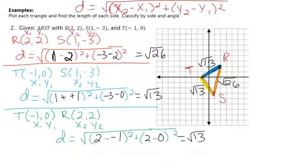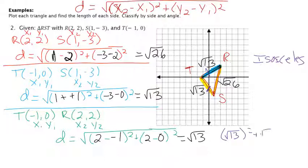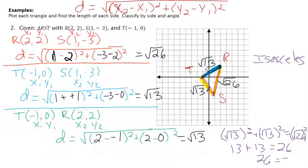After completing the distance formula with those points, the lengths are √26, √13, and √13. Two sides are the same, so by side this is isosceles. Using Pythagorean Theorem, the largest side is √26. We test: (√13)² + (√13)² = 13 + 13 = 26, which equals (√26)² = 26. That's a true statement, so this is a right isosceles triangle.